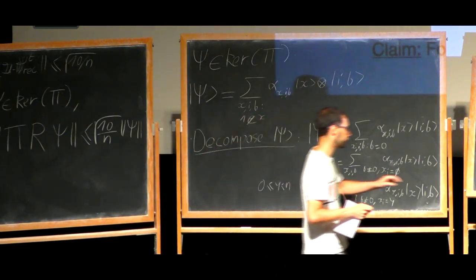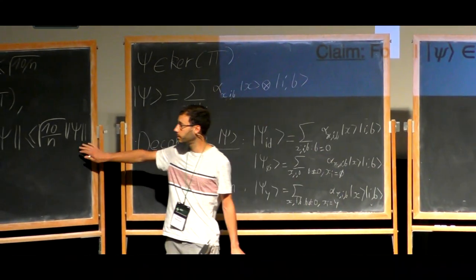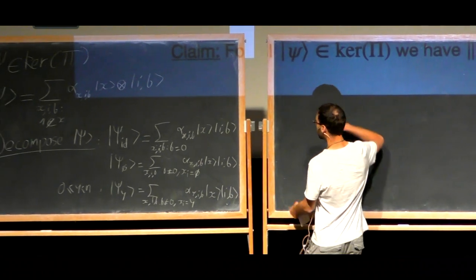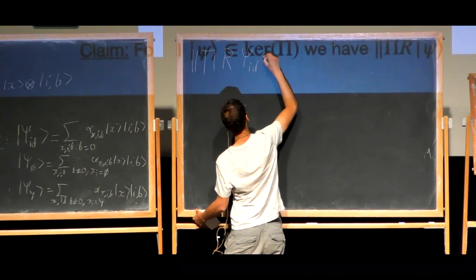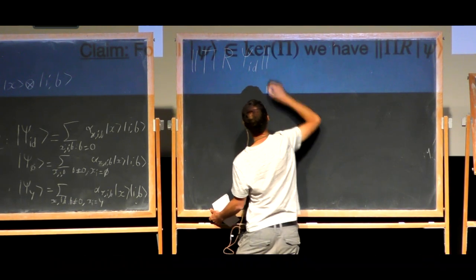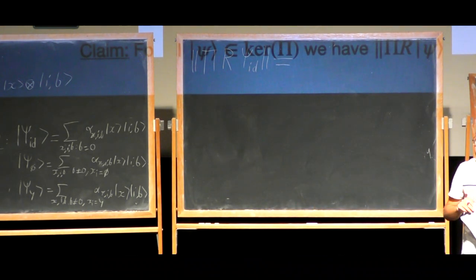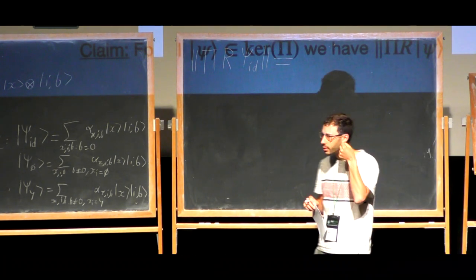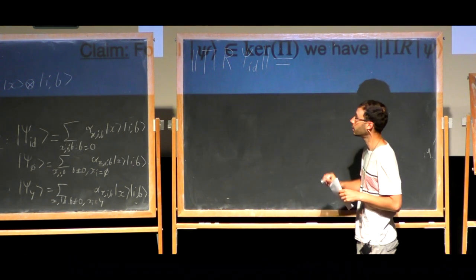We want to bound this quantity for each of those states, and then apply a triangle inequality. Let's start with the first one. What is the norm when we start with psi_{id}, apply a recording query, and then project? Psi_{id} was defined as having b equal to 0. When b is equal to 0, nothing happens if you apply this recording query. So this is just going to be equal to 0.